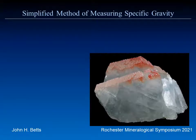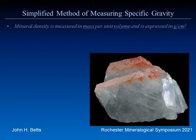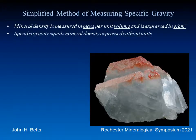This is a presentation on a simplified method for measuring specific gravity. Mineral density is mass per unit volume, expressed in grams per cubic centimeter. Specific gravity is the same as mineral density, but expressed without units — it's just a simple number, and you'll see that in almost all mineral references.